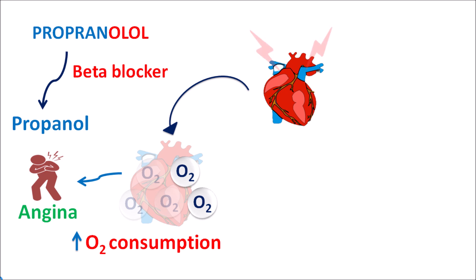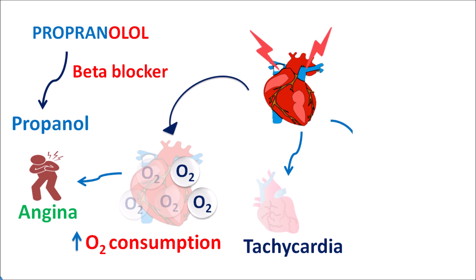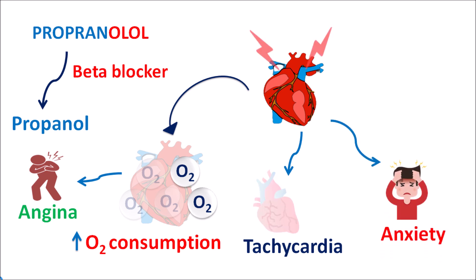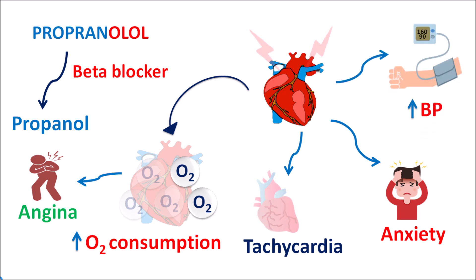Similarly, when cardiac work is excessively increased it can increase the heart rate, resulting in tachycardia and palpitations. And sometimes cardiac work is also associated with the development of anxiety; when anxiety increases it can further increase the heart rate and cardiac work. And finally, raised cardiac work can also increase hypertension, resulting in a rise in blood pressure.